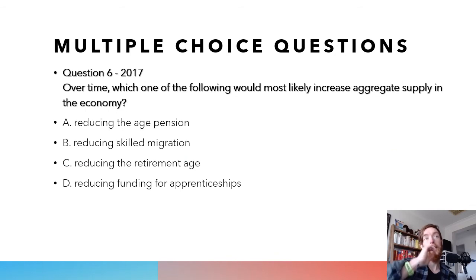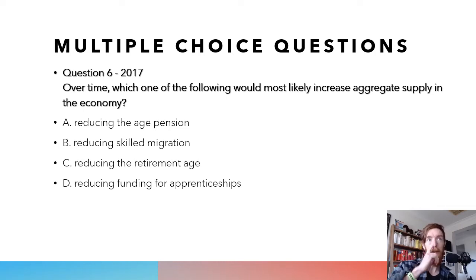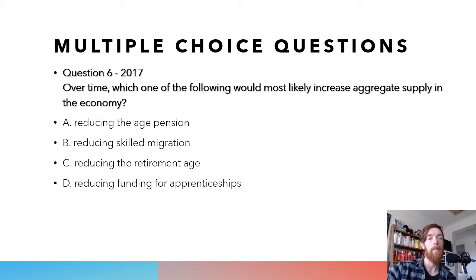Question six from 2017: which of the following would be most likely to increase aggregate supply over time? Options: A — reducing the age pension, B — reducing skilled migration, C — reducing the retirement age, D — reducing funding for apprenticeships. Reducing funding for apprenticeships means fewer people become apprentices, less labour in that area, less productive — decreases aggregate supply. Reducing the retirement age means less labour available because people stop working — decreases aggregate supply. Reducing skilled migration means less skilled labour coming in — reduces aggregate supply.